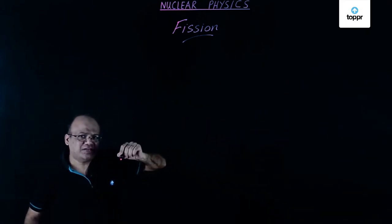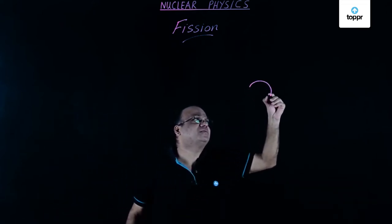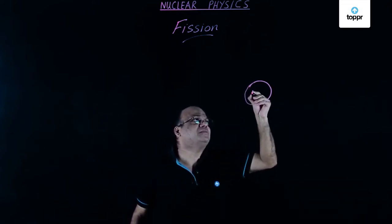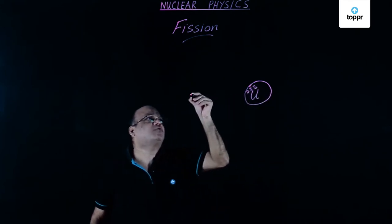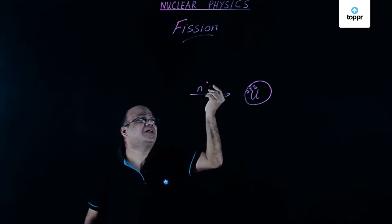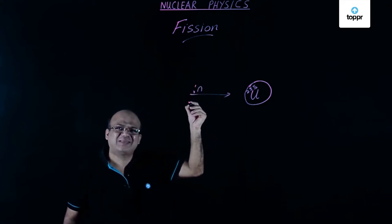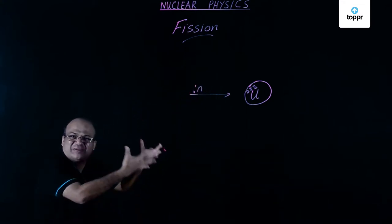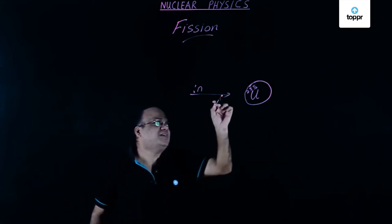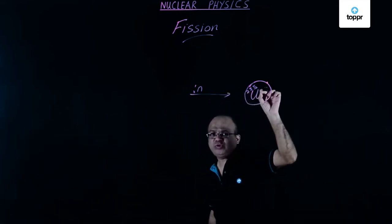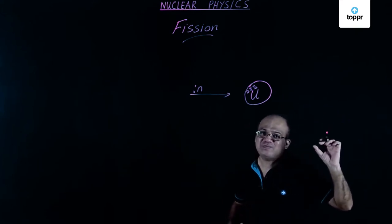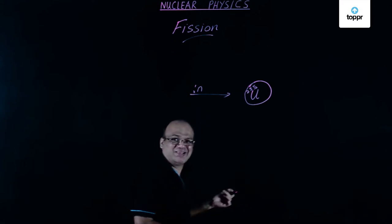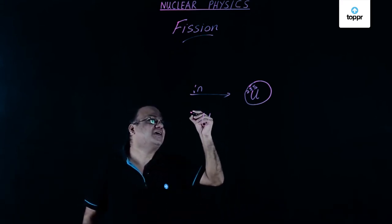Fission is initiated when a heavy nucleus like uranium-235 captures a slow neutron, also known as a thermal neutron because the energy is in the thermal range. When uranium-235 captures a slow neutron it becomes uranium-236 — the mass number increases by 1.